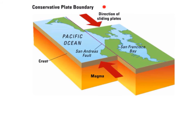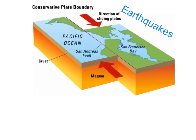This is an example of a conservative plate boundary, where two plates are sliding past each other — one moving one way and the other moving the other way. They're not pulling apart and they're not colliding; they're simply sliding past each other. When two plates slide past each other, it causes pressure to build up. When the pressure is released, earthquakes occur. This type of plate boundary is called a conservative plate boundary because the land is neither created nor destroyed. An example is the San Andreas Fault in California, which we will look at again in a case study.